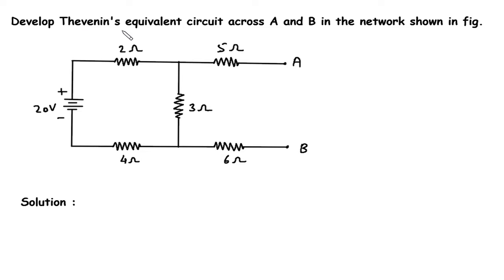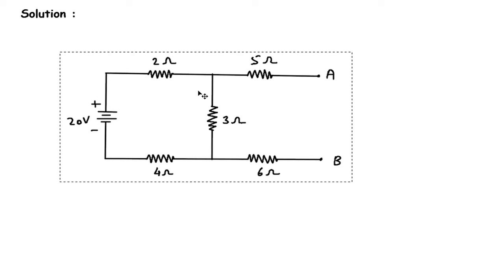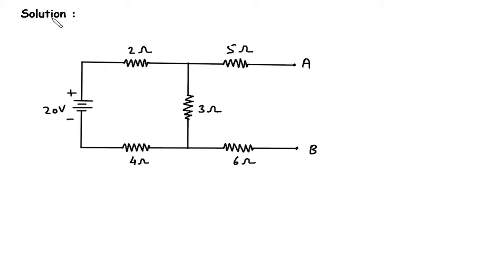We have to develop Thevenin's equivalent circuit across terminal A and B in this network. First we will find Rth, then we will find Vth.